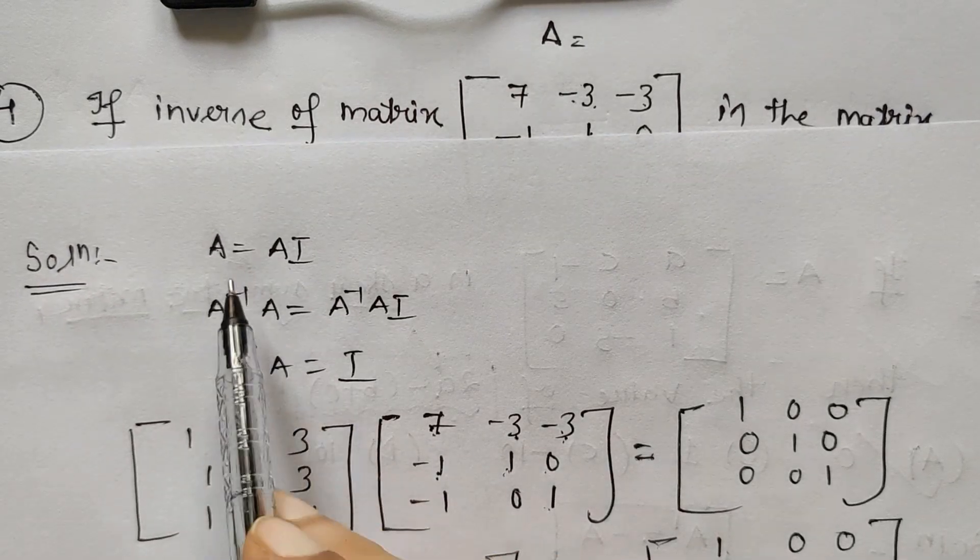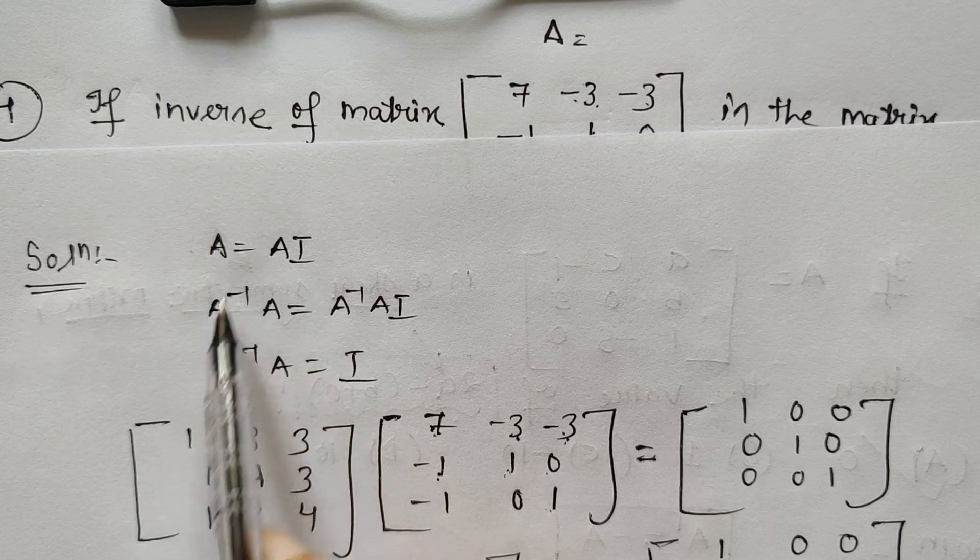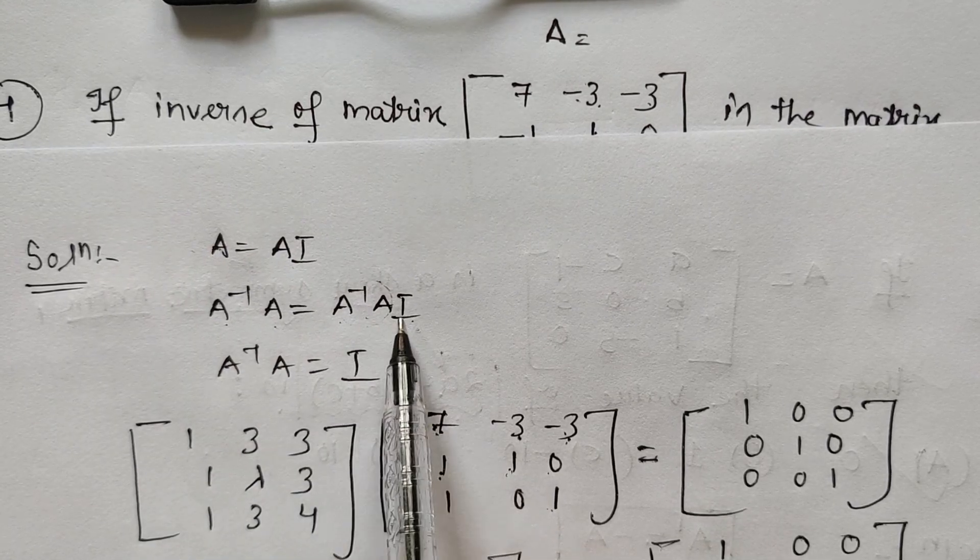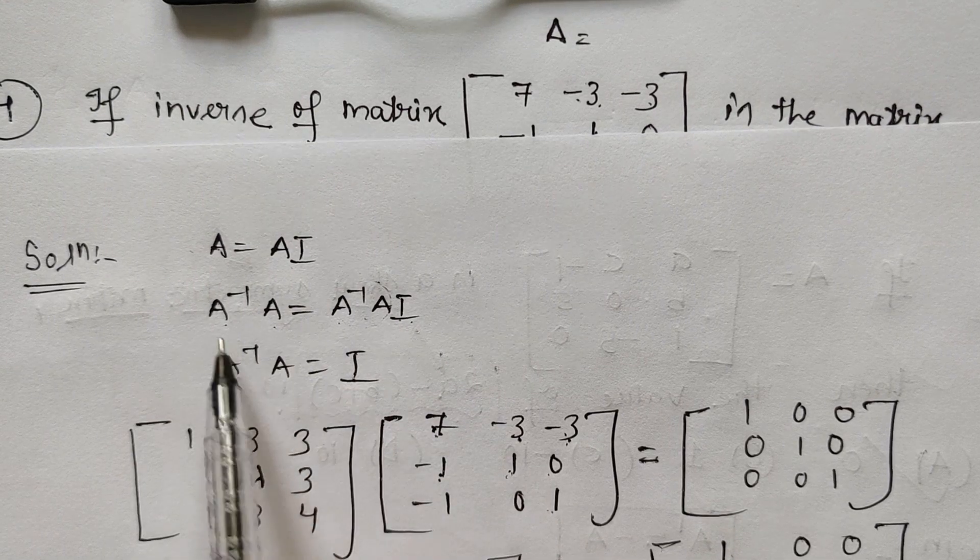Here A equals λI. If I apply A inverse on both sides from the left side, A inverse A equals A inverse λI. This is identity, and A inverse is given in the question, and A is also given.